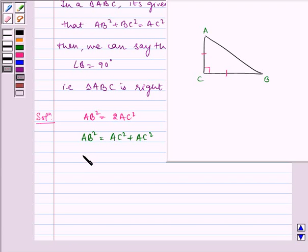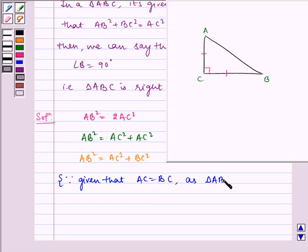We can write AB square as AC square plus BC square, because given that AC is equal to BC, as triangle ABC is an isosceles triangle.